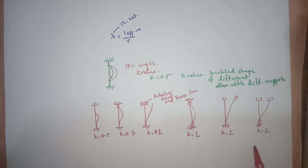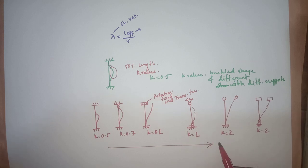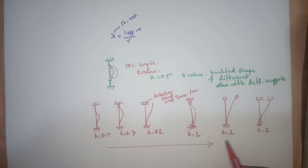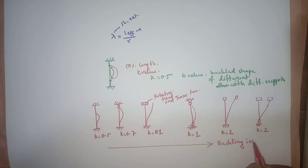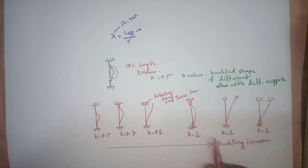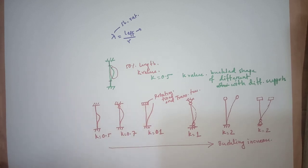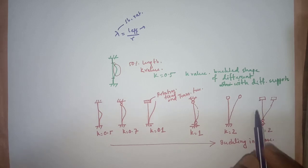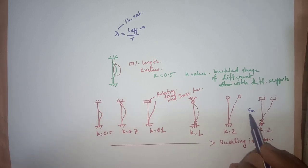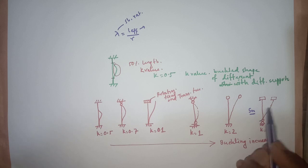So what do these k values represent? The k values represent that the higher the k value, the more buckling the column will face. So buckling increases with the increase of k value.